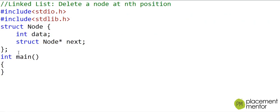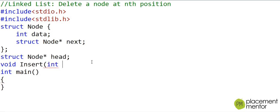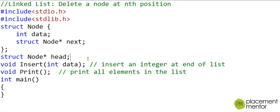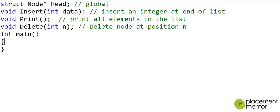I am writing my C program here. I have defined a node which is a structure with two fields: one to store data and another to store the address of the next node. To create a linked list, we create a pointer-to-node variable that stores the address of the head node. I want to define three functions: an insert function that inserts a value at the end of the list, a print function that prints all elements, and a delete function that takes position n and deletes the node at that position. Head is defined as a global variable, so it will be accessible to all these functions.